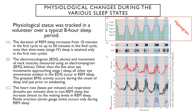Also visible in the physiological data is penile erection, measured with a strain gauge, which is also correlated with REM sleep. Those are the various rhythms associated with sleep. Circadian rhythms are also part of this, which means 'across the day' — circa meaning circle, dia meaning day.